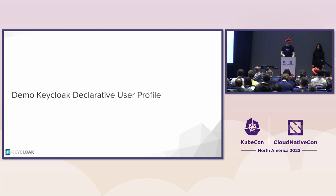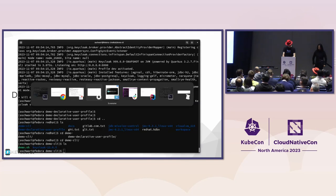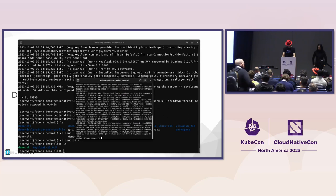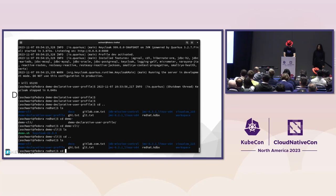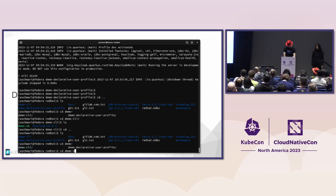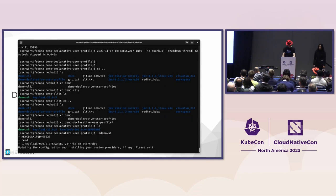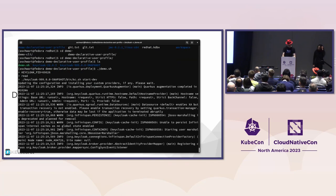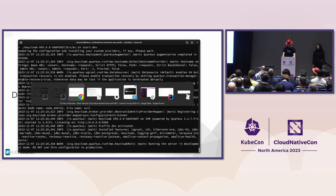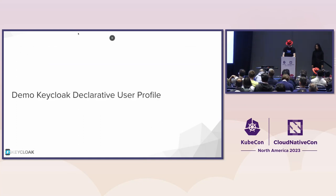Having a look at the Keycloak declarative user profile, I prepared a short demo. You can run Keycloak in dev mode — I'm starting Keycloak with start-dev. This starts Keycloak in a couple of seconds. I go to the browser and log in. If I go to the realm settings, I don't see declarative user profile because it's a preview feature. I need to kill Keycloak and run it again with the feature declarative user profile enabled.